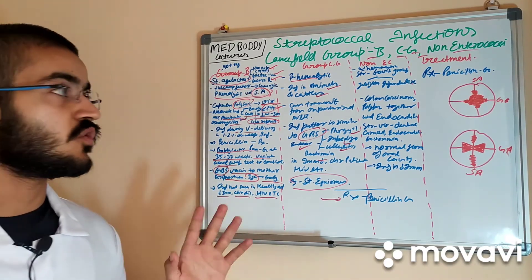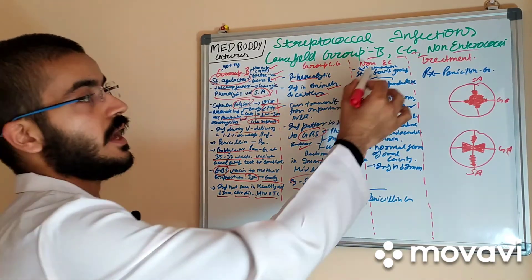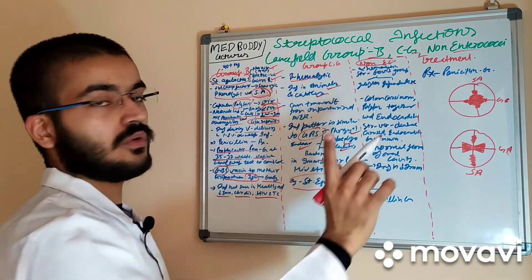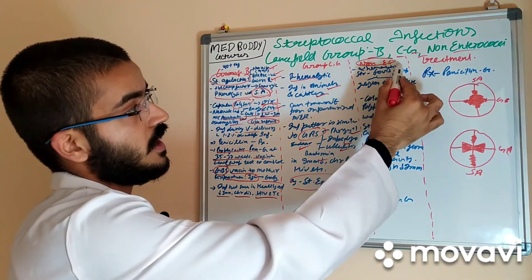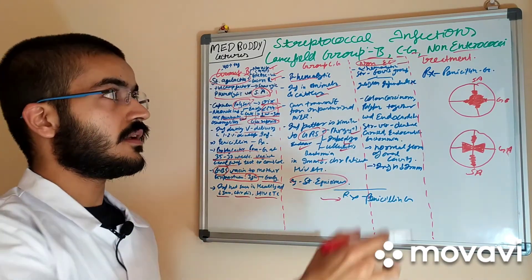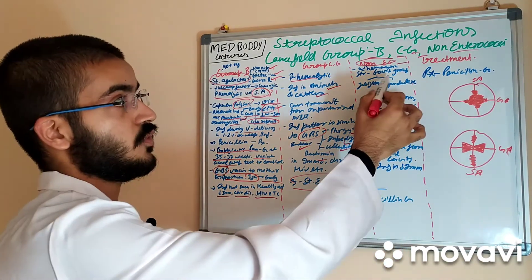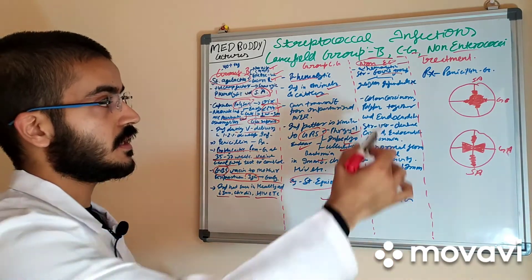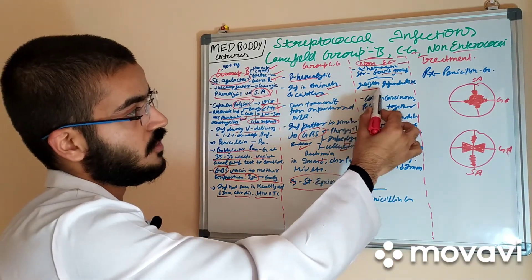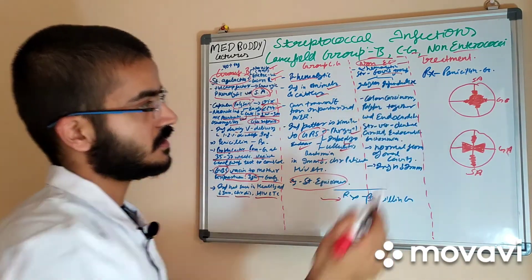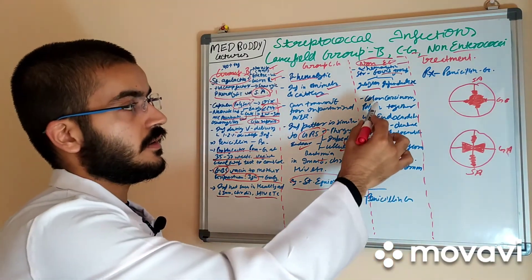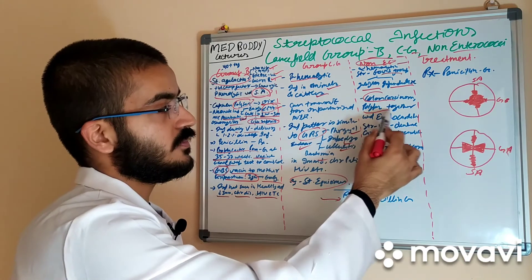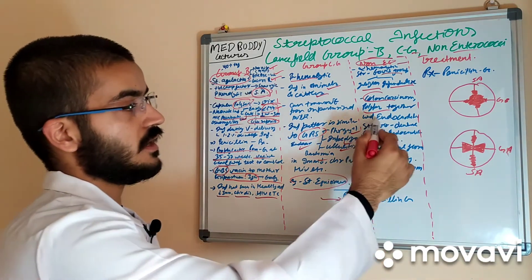Non-enterococci. These form alpha hemolysis. Examples of, or it is also called as bovis group. And it has Streptococcus gallolyticus and infantarius.